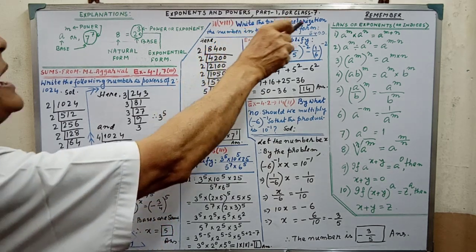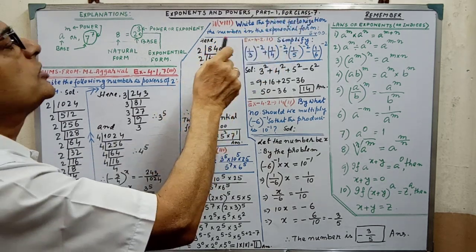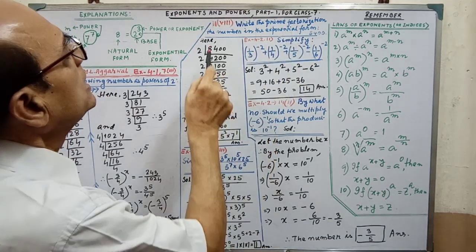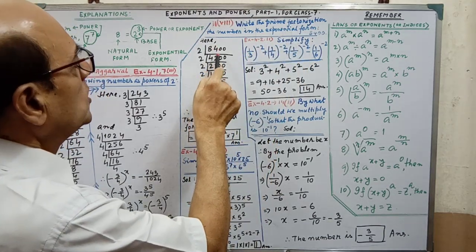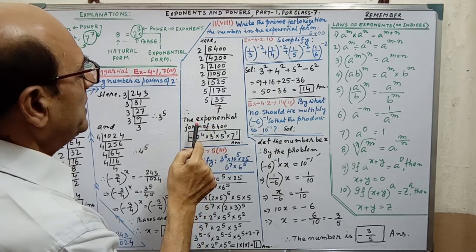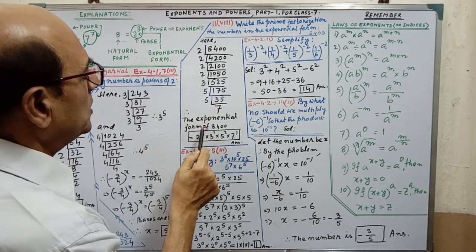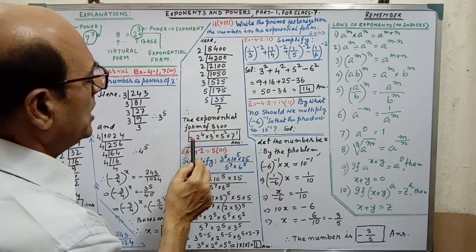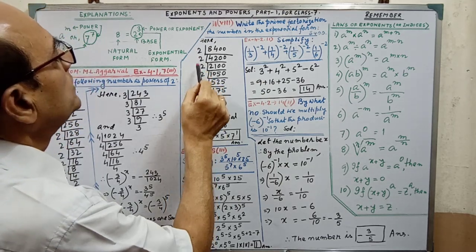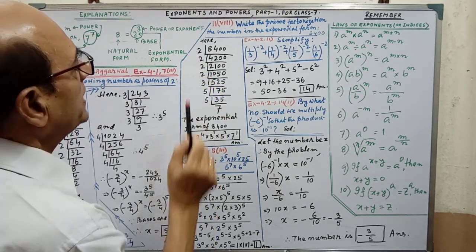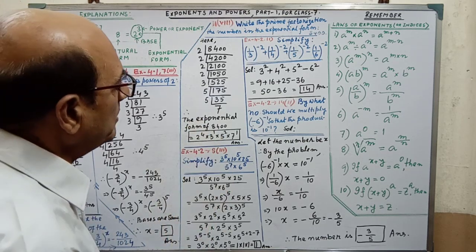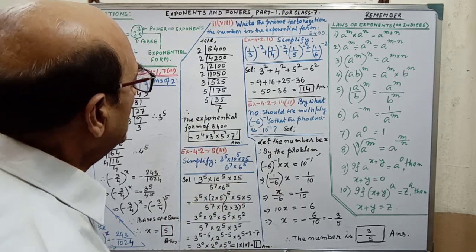Next, write the prime factorization of the number in exponential form — same approach. You have to split using LCM. Then you will get the exponential form. That is 8400 equals 2 to the power 4, into 3 to the power 1, into 5 squared, into 7 to the power 1. This is the exponential form.